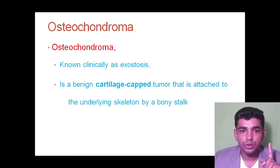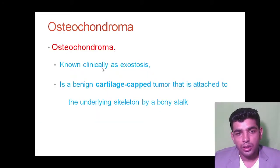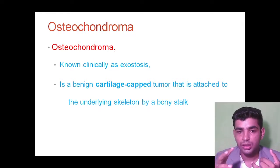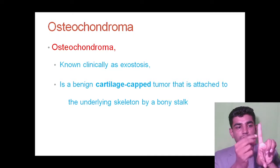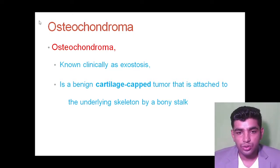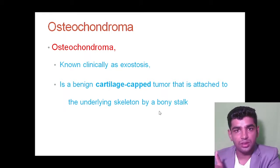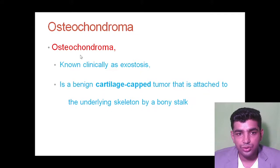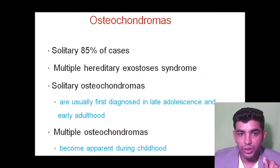Osteochondroma is the first benign type to discuss. Clinically it is known as exostosis — 'exo' means outside and 'stosis' means formation of cartilage outside the bone. It is a cartilage-capped benign tumor attached to the underlying skeleton via a stalk. It may be solitary in 85% of cases — this is an important MCQ point: osteochondroma constitutes 85% of cases.